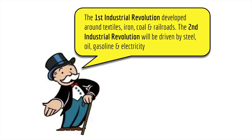The first industrial revolution that we've previously been studying was developed around the production of textiles. So it was textile machines and then mills and factories which really ramped up our industrial revolution in England. Also iron and coal and railroads were kind of the foundation of that first industrial revolution. As we get closer to the 1900s, we're going to begin to see a shift away from these products and into some new products and inventions.